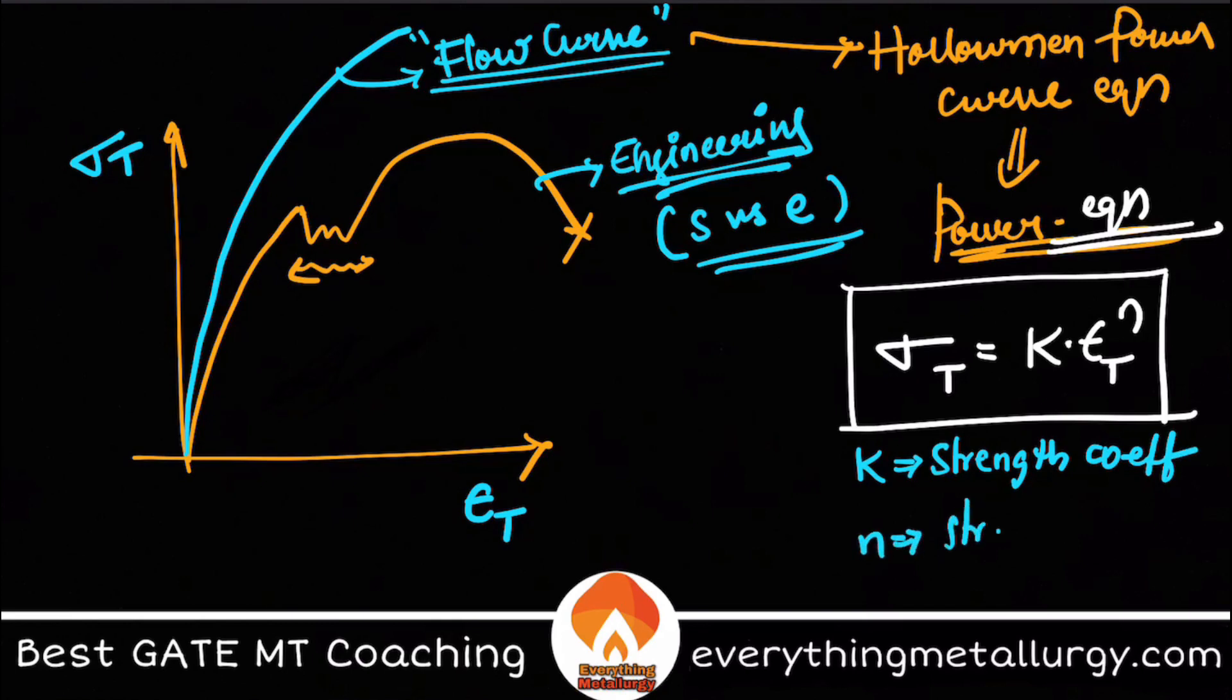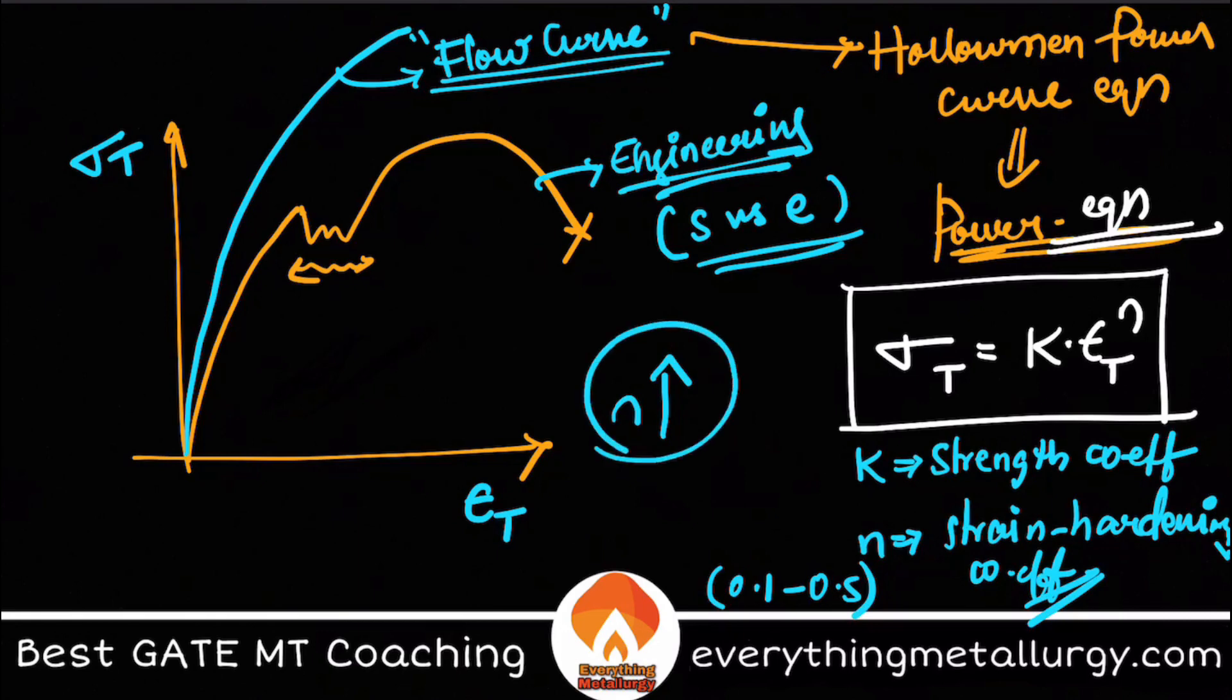And n is your strain hardening coefficient. K is strength coefficient and n is strain hardening coefficient, usually it lies between 0.1 to 0.5. This n value is usually determining how plastically my material has been deformed. If I have high n value, then this particular material can be deformed plastically for more extent without any necking. That means without any localized reduction of area, the strain hardening region is more for materials which have high n values.